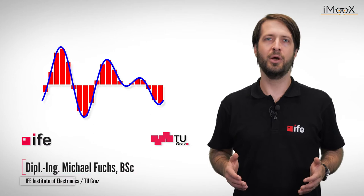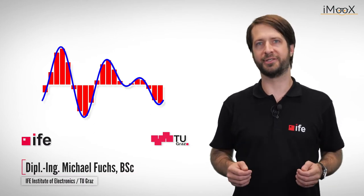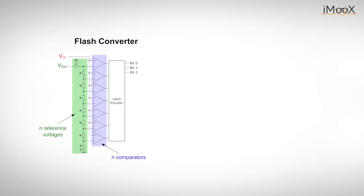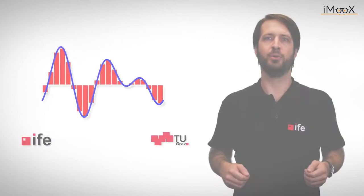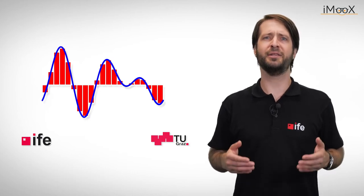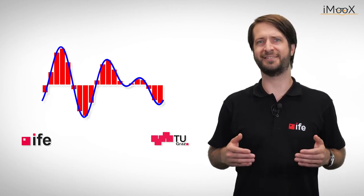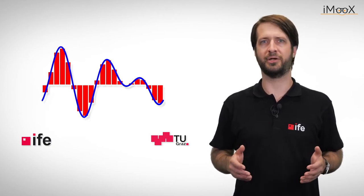In our last video we talked about two basic topologies of analog-to-digital converters, the flash converter and the successive approximation converter, as well as their advantages and disadvantages. We found that flash converters are very fast but have quite low resolution, while SAR converters have high resolution but are rather slow in comparison.